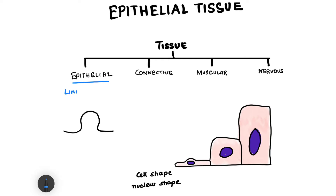The main function of epithelial tissue is lining and covering of important structures. If you have a body part, the outer surface of that body part is covered by epithelial tissue — that is known as covering, to cover the outer side.